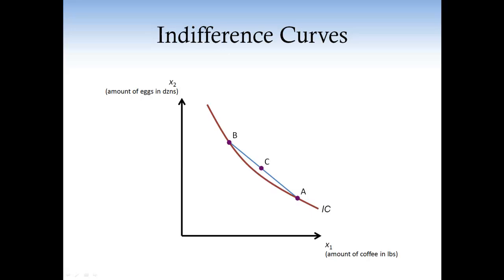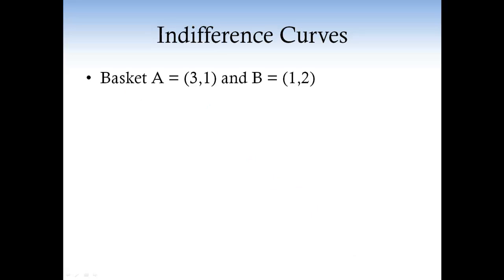Yes and no. What is the average basket, though? It is pretty much what it says. It is a basket composed by the average quantities of the two baskets. So, for example, if A is the basket containing three units of coffee and one unit of eggs, and B is the basket containing one unit of coffee and two units of eggs, the average basket C contains two units of coffee and 1.5 units of eggs.